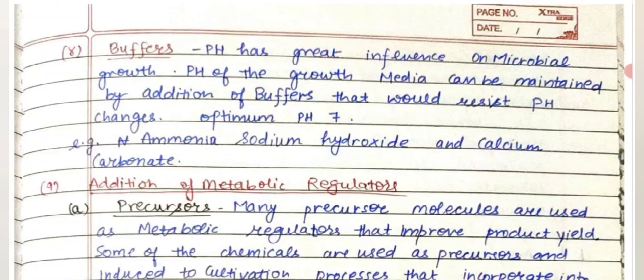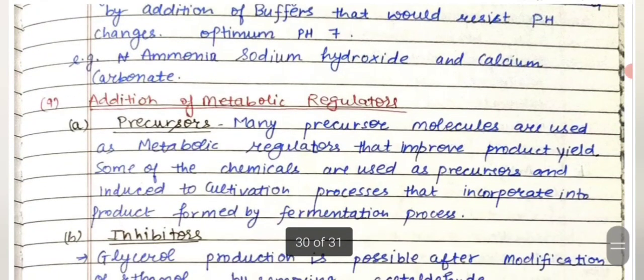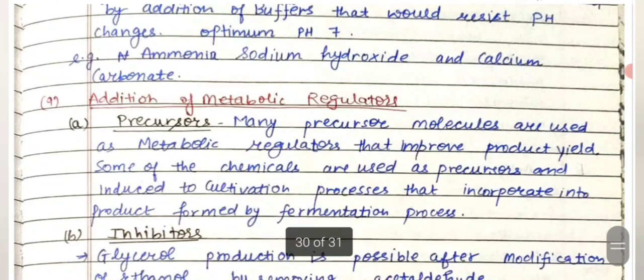The optimum pH for microbial growth is around 7. To maintain optimum pH-based growth, ammonia, sodium hydroxide, and calcium carbonate can be used as buffers in the fermentation media.